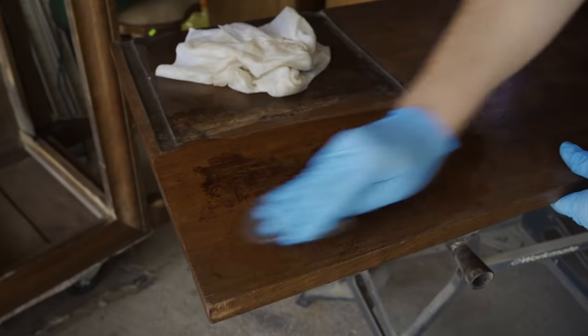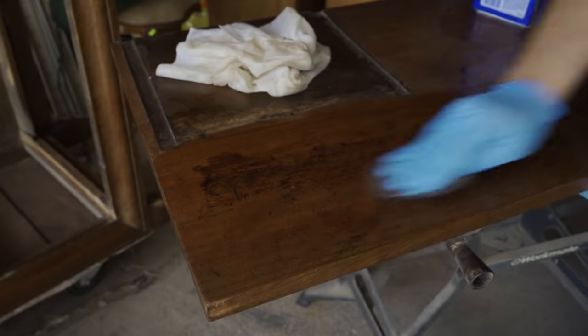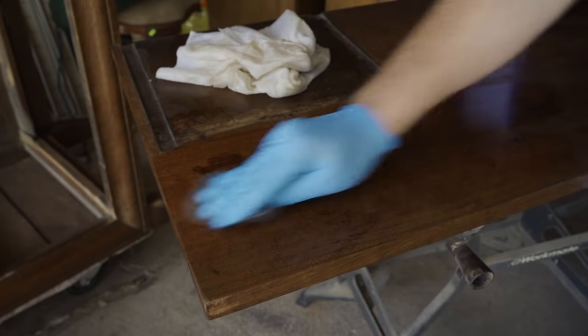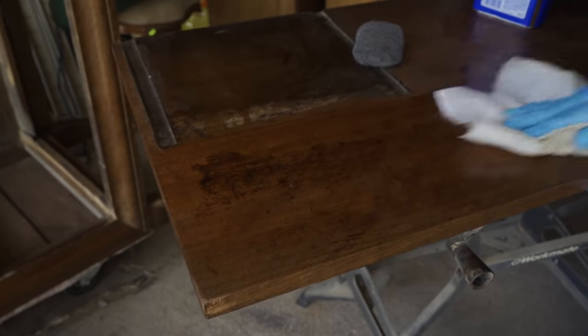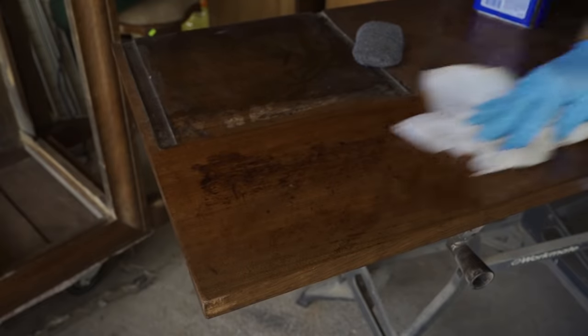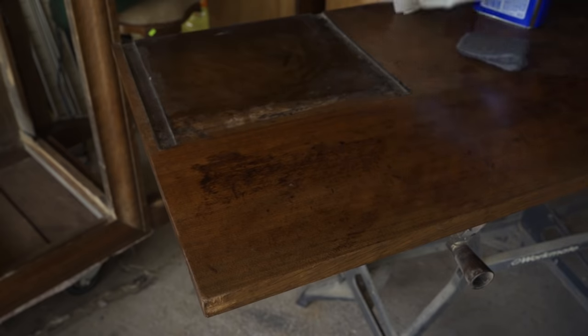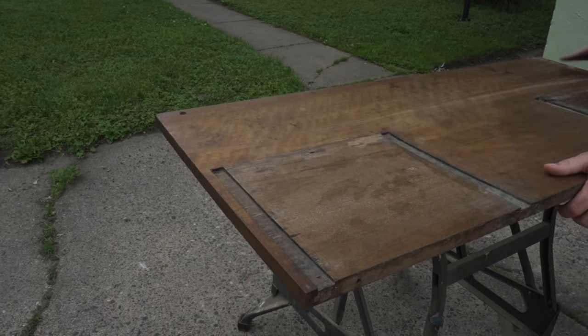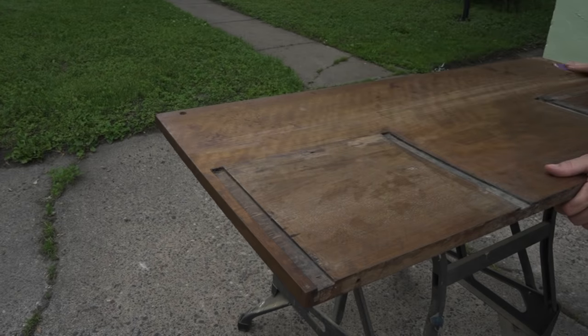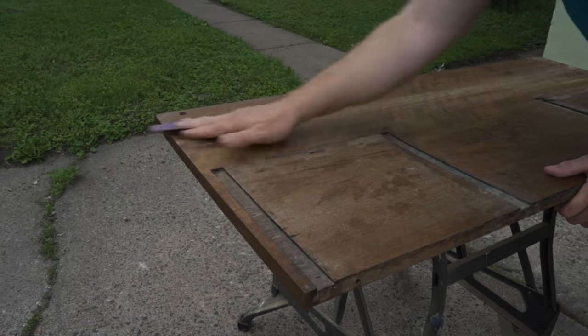After all the finish was removed, then I had to address all of these stains and spots and marks that were in the top. The worst of it being this spot right here. There's also a large spot on the other side, and in between the two were just a whole lot of small, dark spots. The first thing I tried to get rid of these spots and stains was some oxalic acid, which usually works great for removing stains that were caused by water.